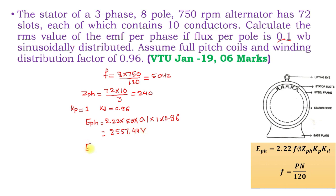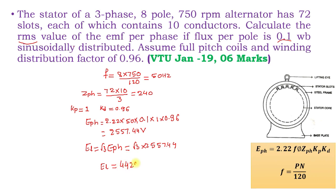Then the line voltage = √3 × EPH. In this problem, they state the RMS value and line value are the same. Therefore, EL = √3 × 2557.44, and the RMS value of the generated EMF is 4429.6 volts.